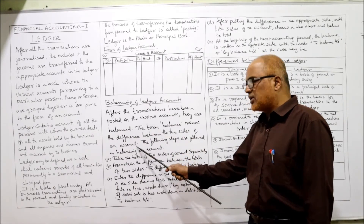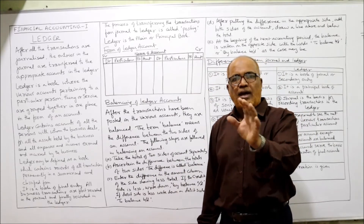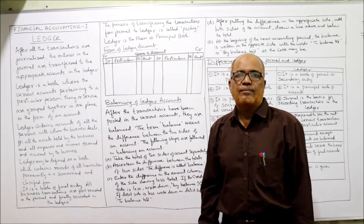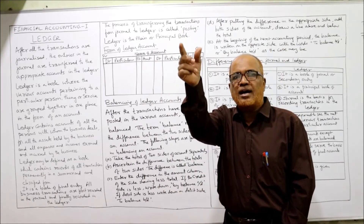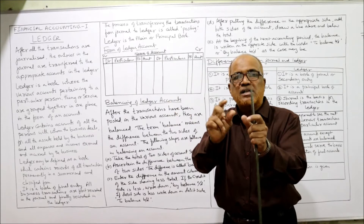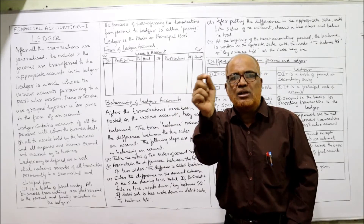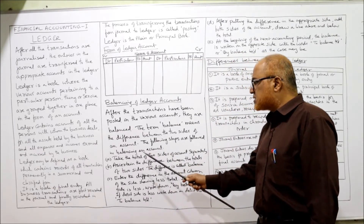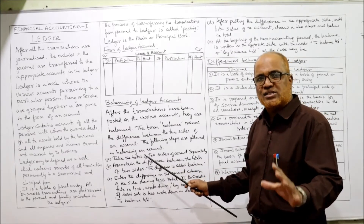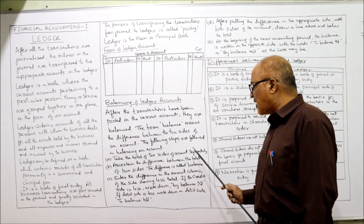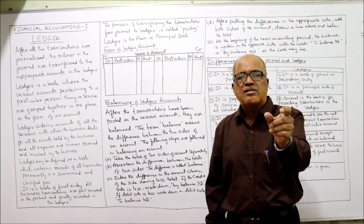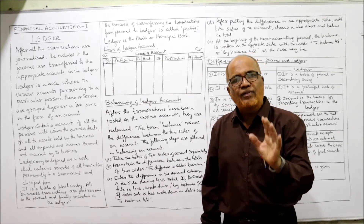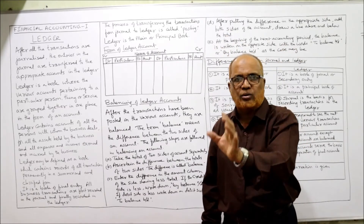After the transactions have been posted in the various accounts, they are balanced. The term balance means the difference between the two sides of the account — debit side and credit side. For example, if the debit side total is 80,000 and the credit side total is 70,000, the difference — 80,000 minus 70,000 = 10,000 rupees — is called the balance.